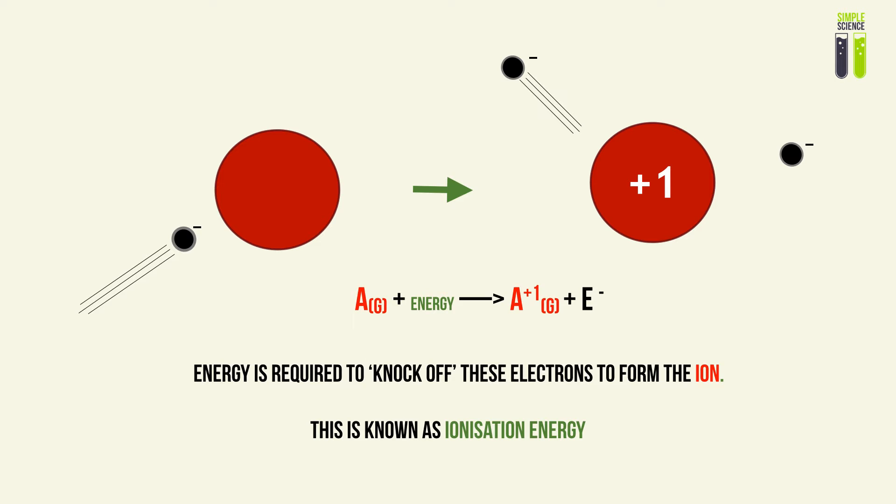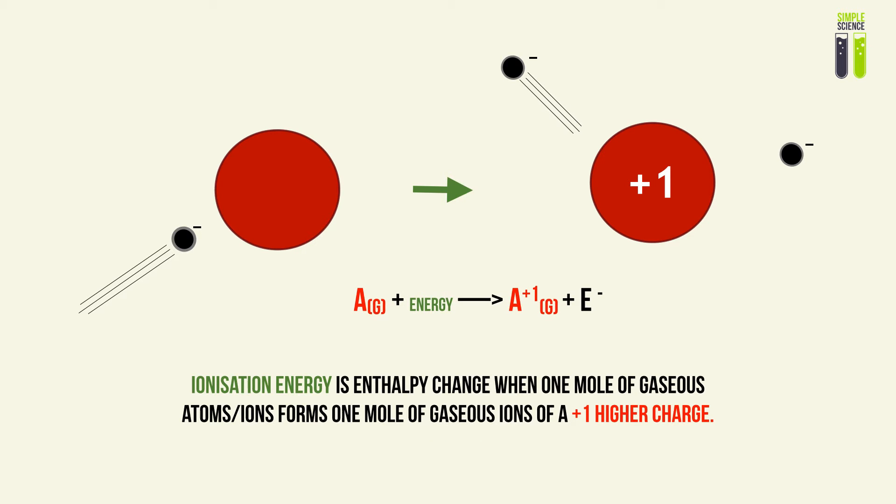This energy can be measured per electron, per mole of electrons, or per mole of atoms or molecules. The ionization energy is standardly defined as the enthalpy change when one mole of gaseous atoms or ions forms one mole of gaseous ions with a plus-one higher charge. In other words, it is the energy required for an electron to be removed to form an ion with a one-plus higher charge.